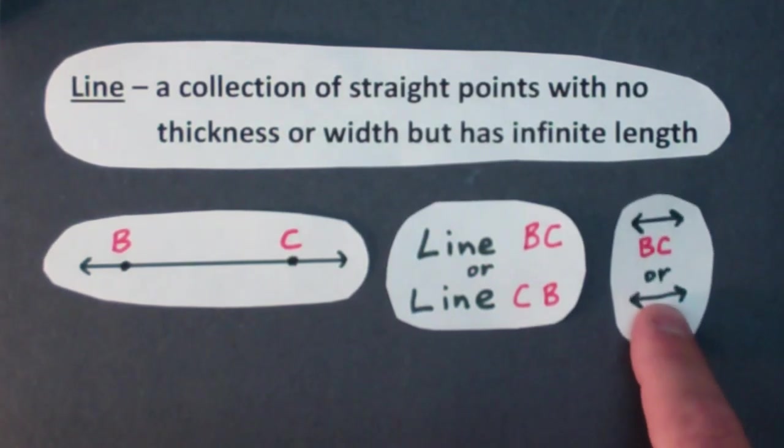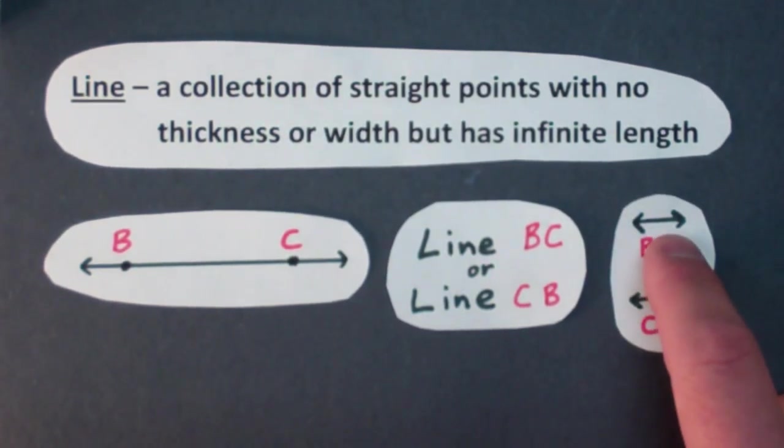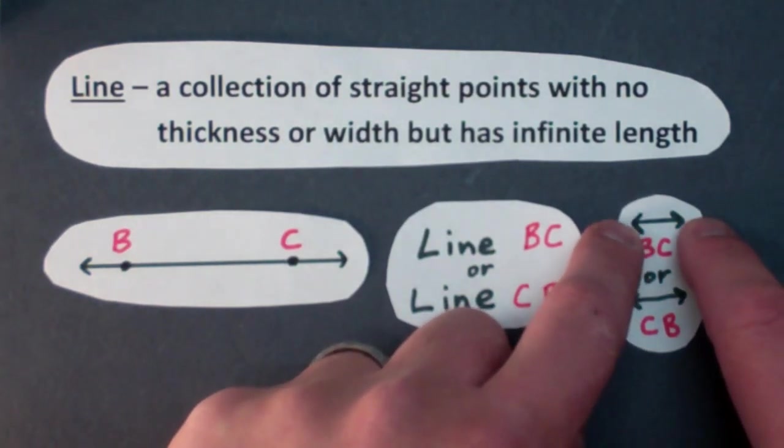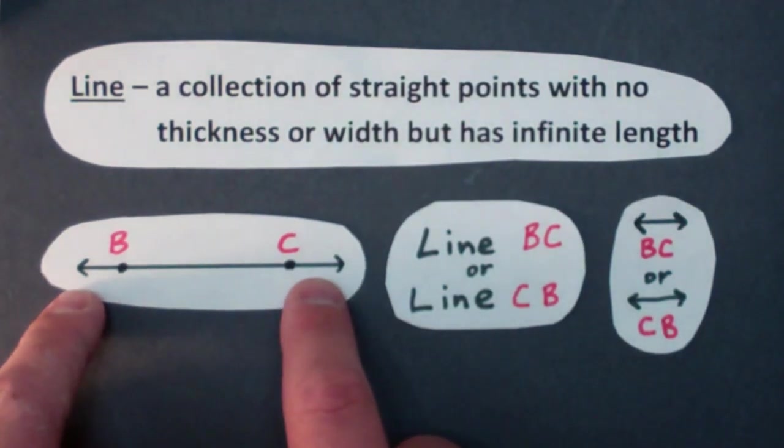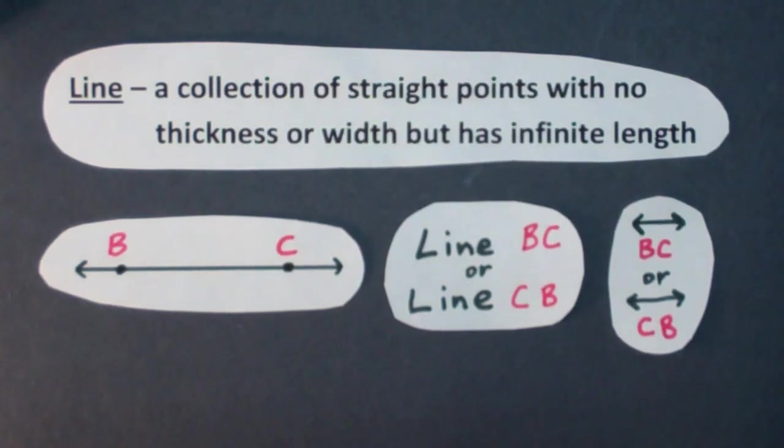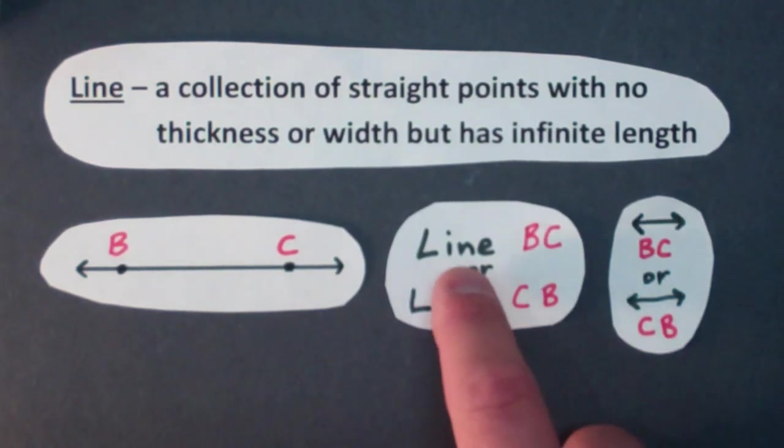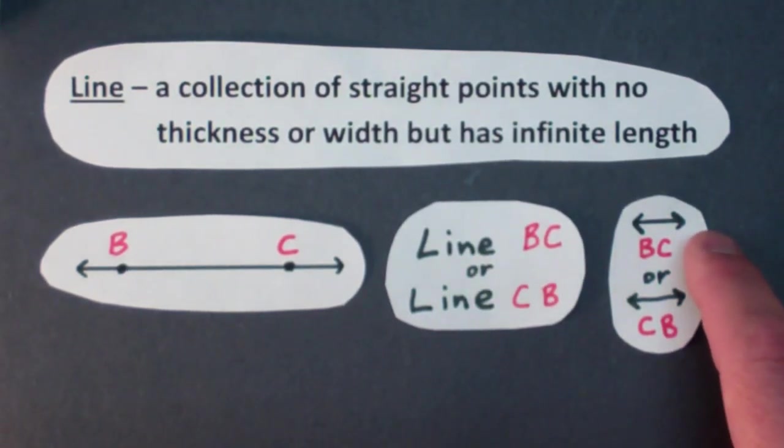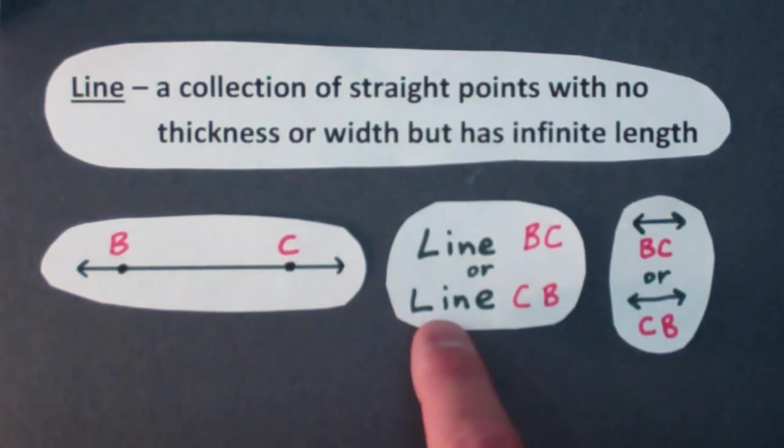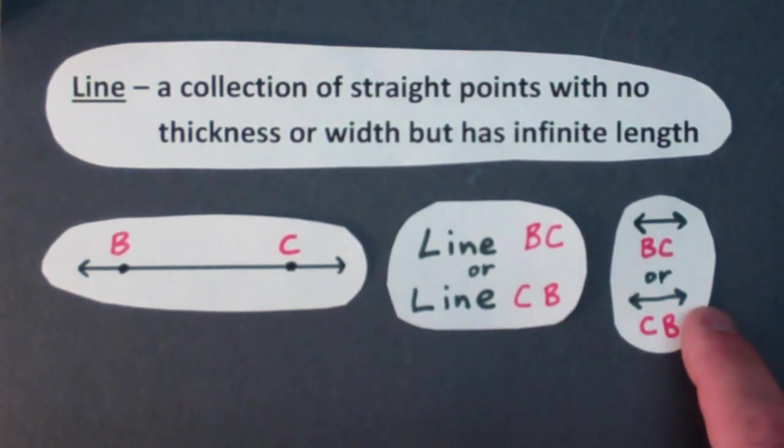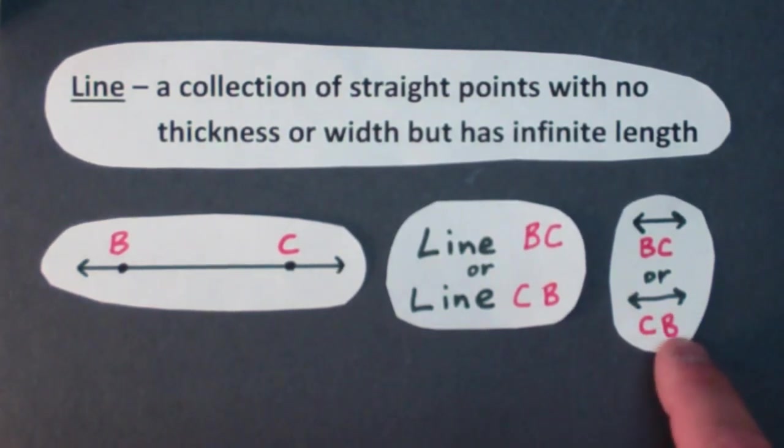And then there's a symbol for line which I prefer to use which is a line with two arrows on it. There are two arrows on the symbol. There are two arrows on the illustration. So this symbol means line. Make sure you put two arrows on there otherwise it means something different. So we have line BC with the word or the symbol line BC or we have line CB or the symbol for line and then line CB.